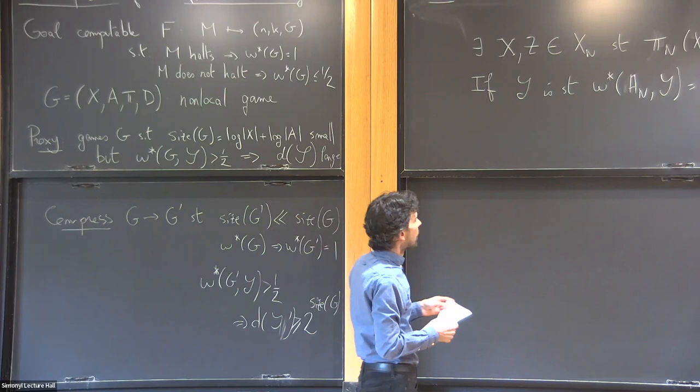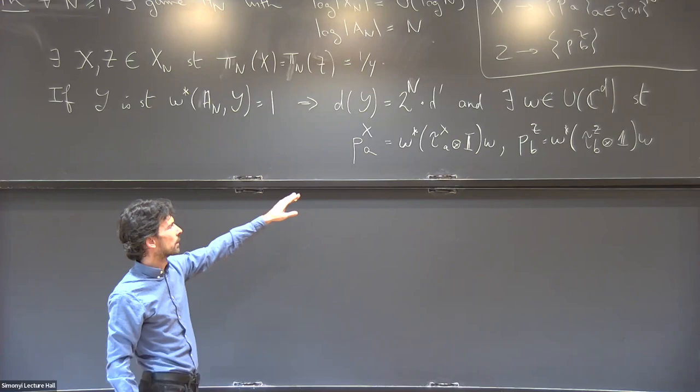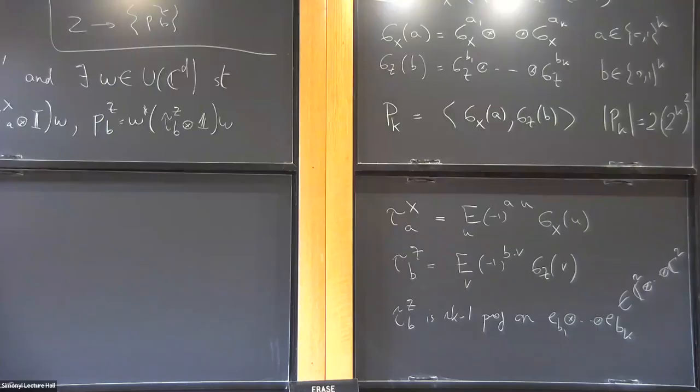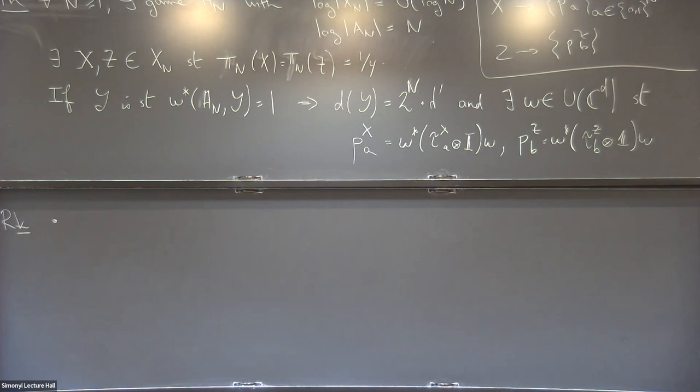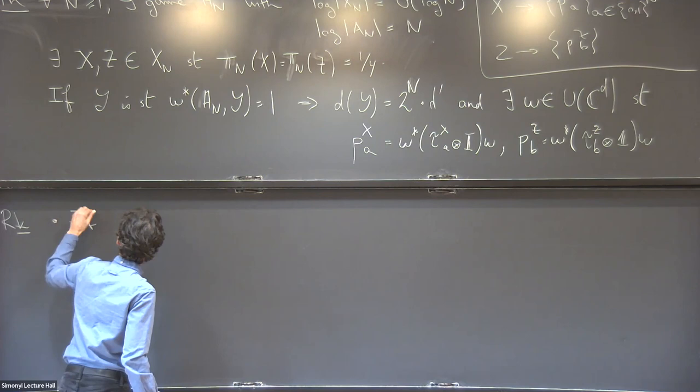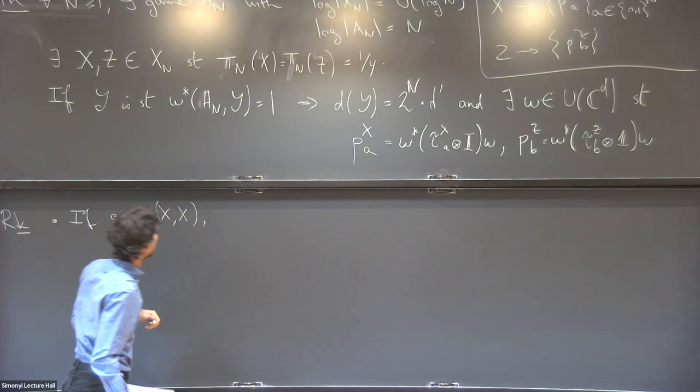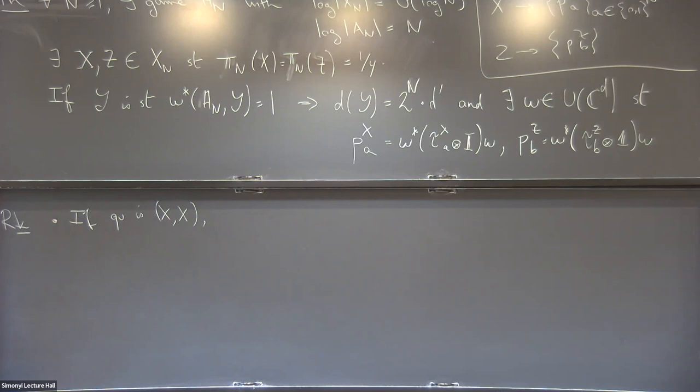Here's one important observation — the reason I use the Pauli matrices and why it's important to get these specific projections. Suppose in the game we ask the question pair X, X. I want to look at the distribution on answers provided by any successful strategy. The formula gives: P(A, B | X, X) equals one over D times the matrix trace of P_X(A) times P_X(B).